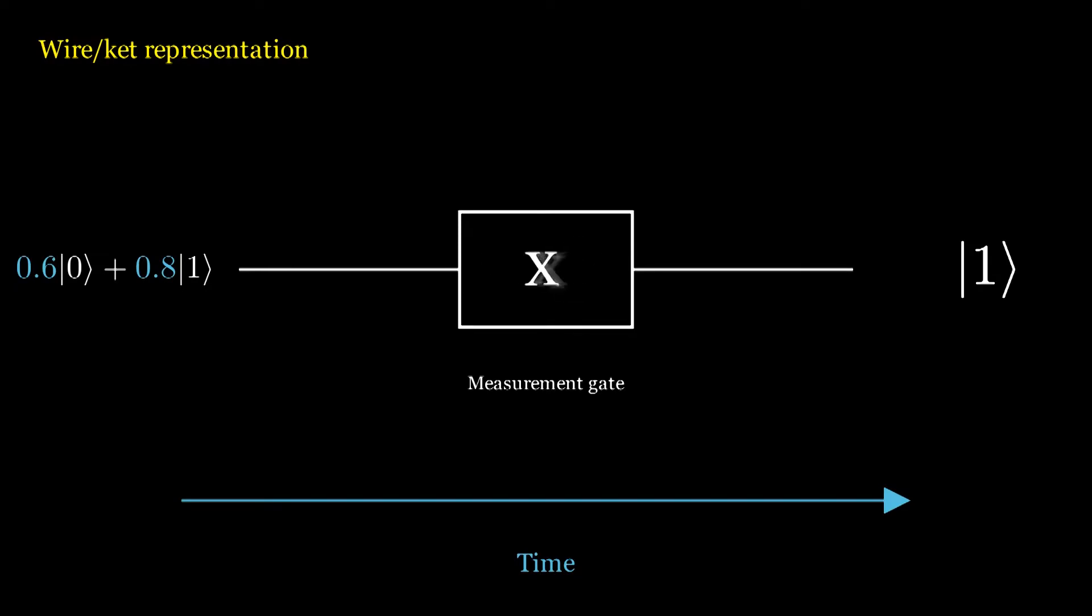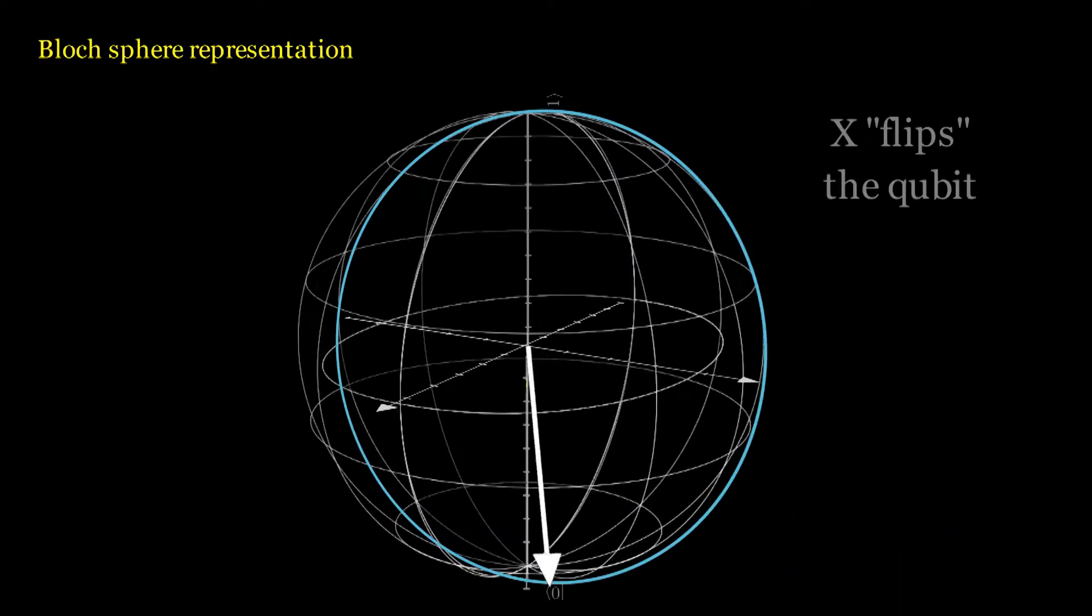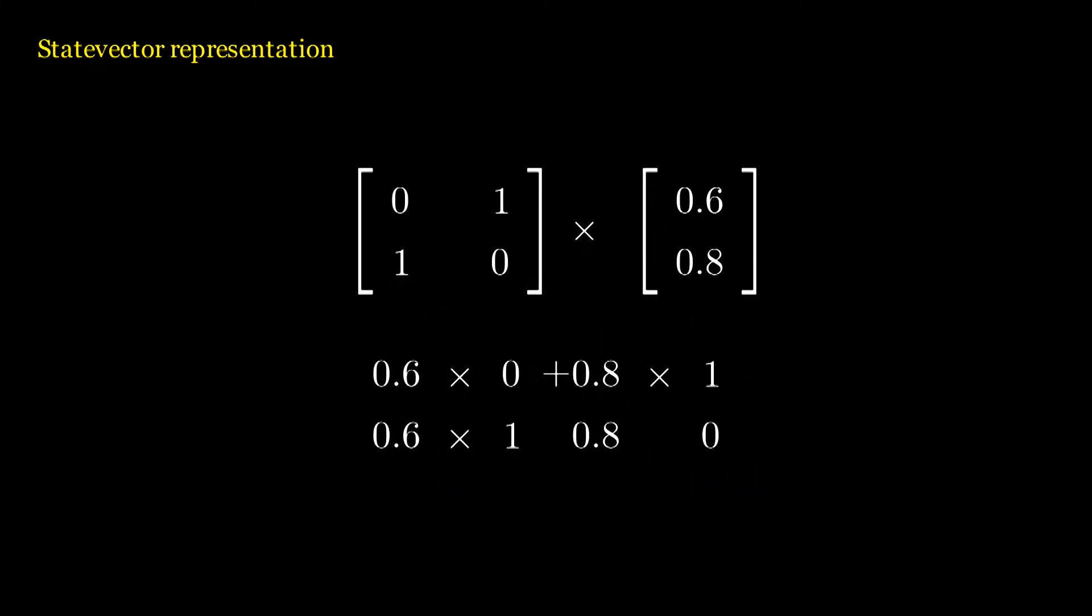For example, take the x gate, which takes a quantum state and changes it to its opposite. Quantum gates are 2 by 2 matrices. And for x, its matrix looks like this. You can indeed validate that it does what it claims to do. If you multiply x by the vector, you really do see that the result is flipped amplitudes.